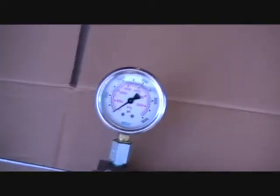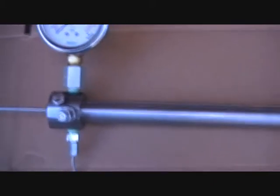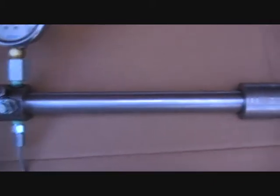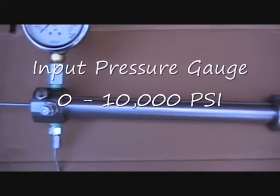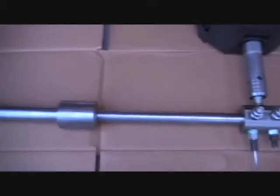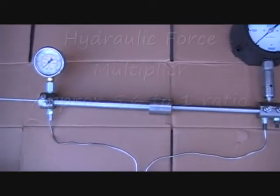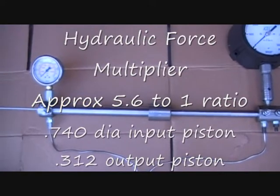What I have, I have an input side here, low-pressure cylinder that will apply up to about 7,000 psi. Then the output side, it's really a hydraulic multiplier. It multiplies the pressure by about 5.6.